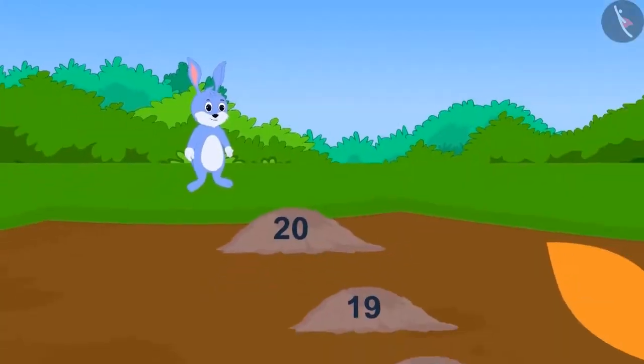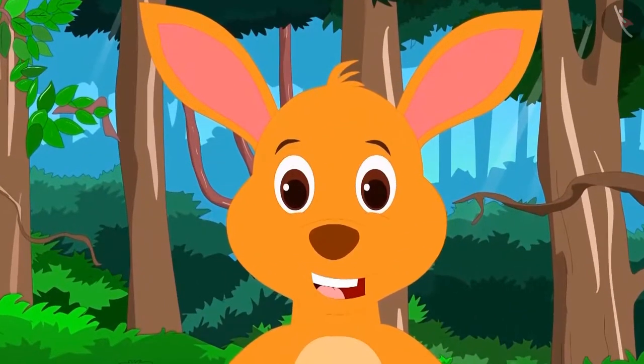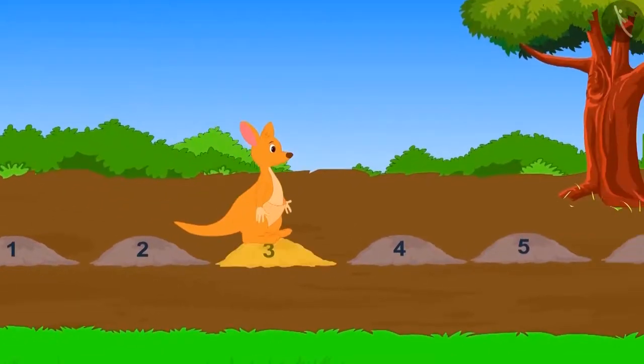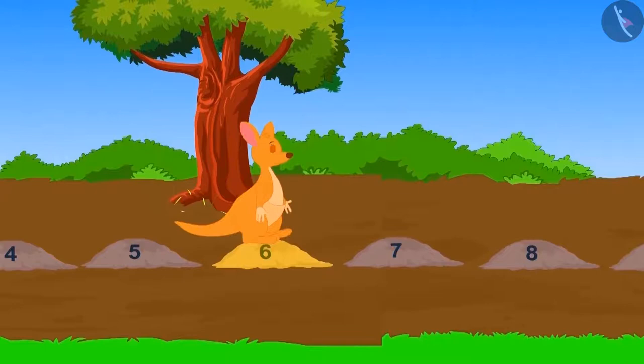Seeing bunny, now kittu kangaroo has also gathered courage. Kittu can take three steps in one jump. First, he took one jump and reached the third stone. Now, he took another jump, reached three steps ahead and further reached which step? On the sixth stone.